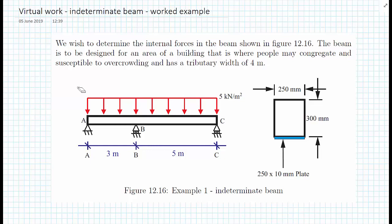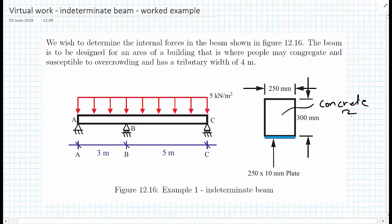We're given the beam cross-sectional details. The top section, which is 250 millimeters by 300 millimeters, is concrete and will have a stiffness of around 30 GPa. We also have a plate on the bottom made of steel, which will have a stiffness of 200 GPa. We'll have to calculate the second moment of area ourselves and also work out the loading including the self-weight of the beam, which cannot be neglected.